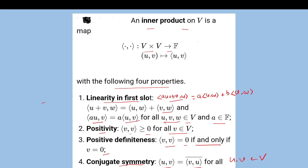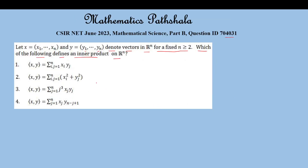Now let's go to the problem. We fix N equal to 2 for all options. Option 1 is: x1·y1 + x1·y2 + x2·y1 + x2·y2.